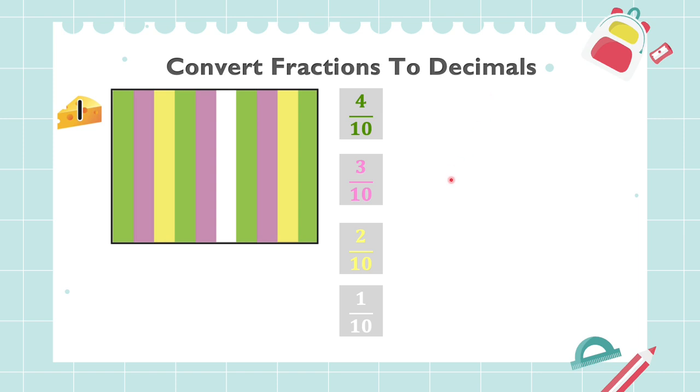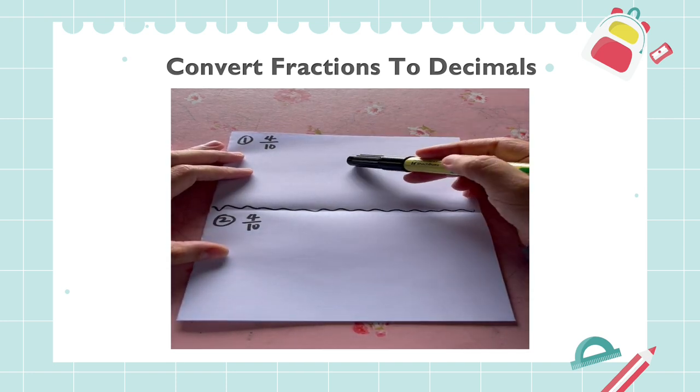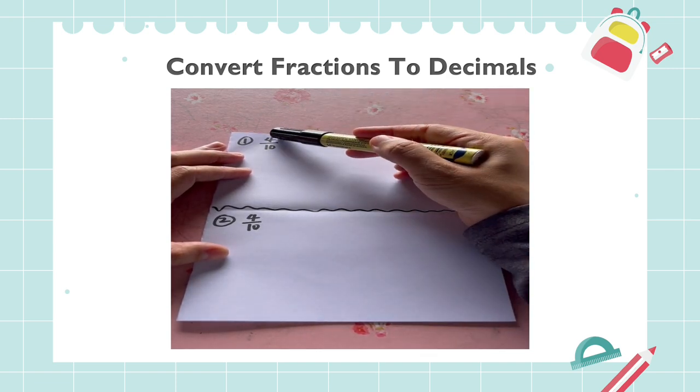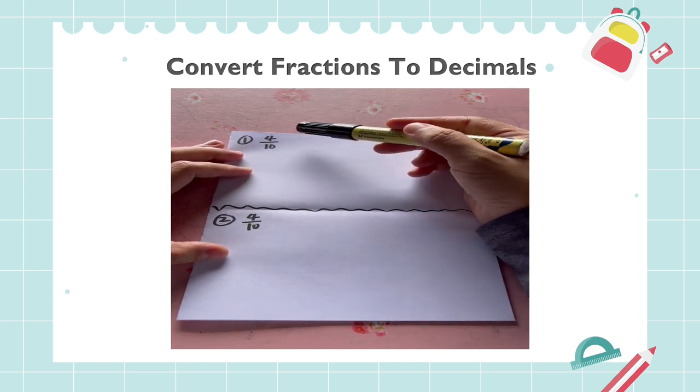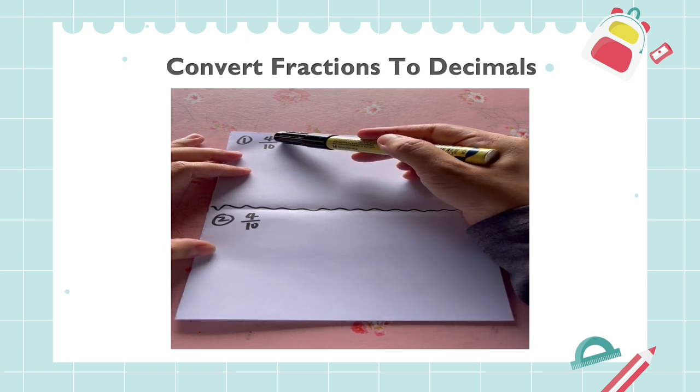So how to convert these fractions to desimal? Macam mana kita mau tukar pecahan-pecahan ini kepada bentuk perpuluhan? Mari kita lihat video ini. There are two ways to convert fraction to decimals. Ada 2 cara untuk tukar pecahan kepada perpuluhan. Cara pertama, kita bahagi. 4 per 10 maksudnya 4 bahagi 10. Per atau over ini adalah bahagi.